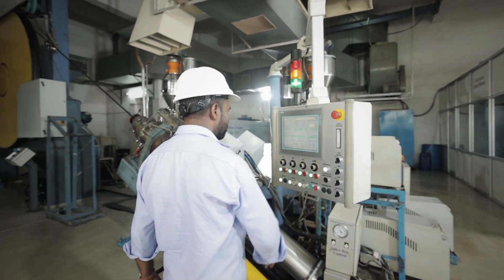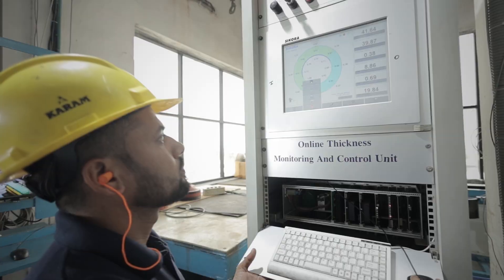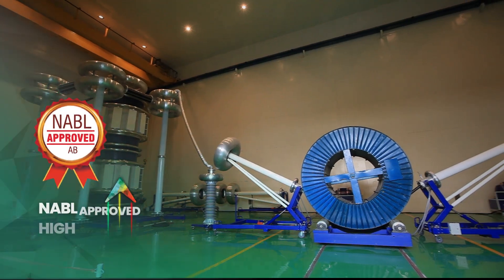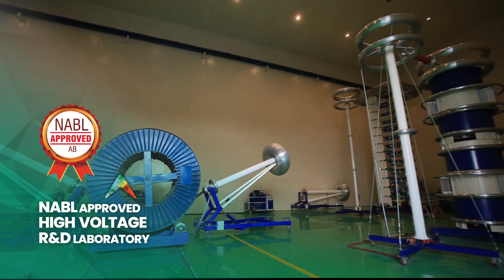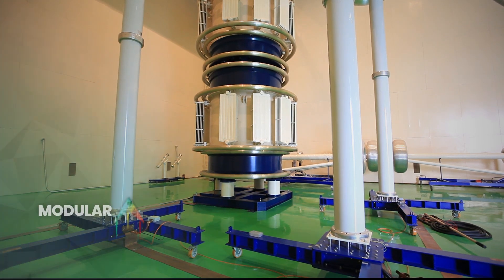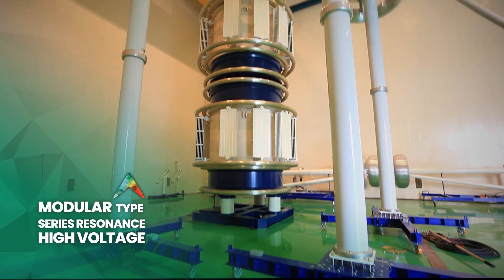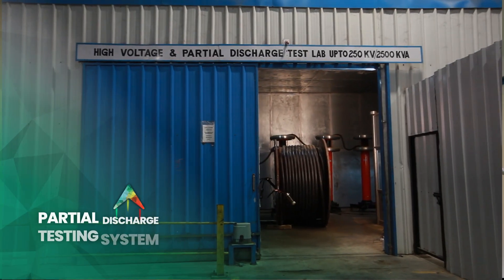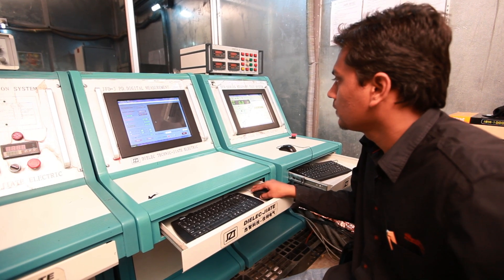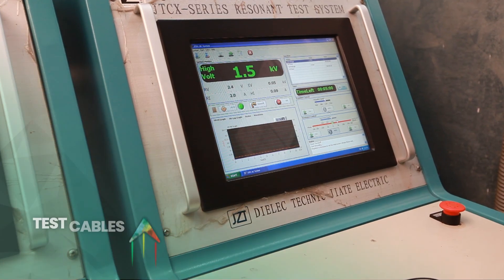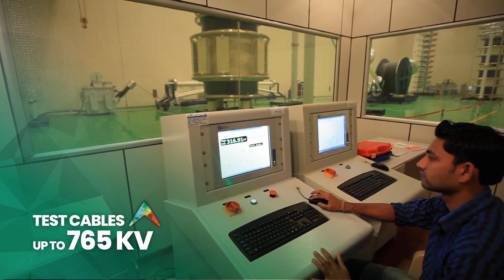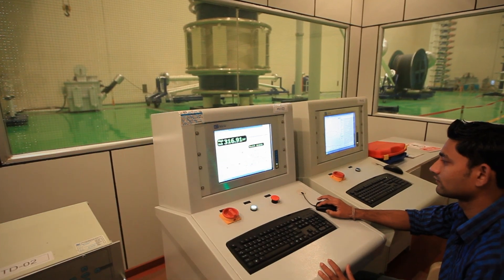At DICAT, quality is more than a promise. It's embedded in every stage of our production process. Our NABL-approved high-voltage R&D laboratory is equipped with cutting-edge technology, including the modular type series resonance high-voltage and partial discharge testing system to ensure our products exceed industry standards. The lab can test cables up to 765 kV, a capability that not many labs in India can match.